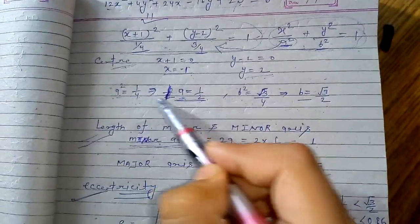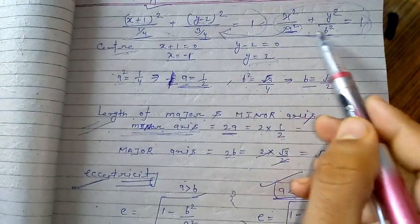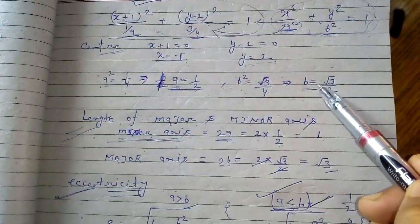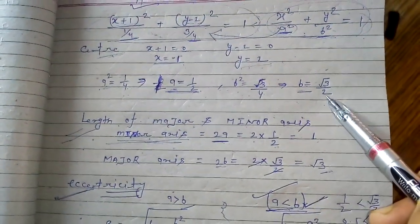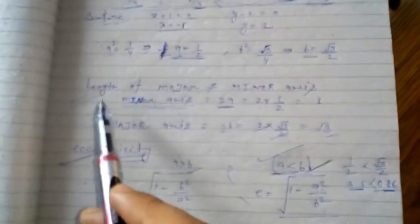Then we will find out the a and b values. a squared equal to 1 by 4, so we get a equal to 1 by 2. Comparing b squared equal to 3 by 4, we get b equal to root 3 by 2.